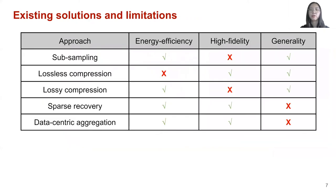There are several existing solutions trying to address this problem. However, all of these existing solutions have their own limitations. Subsampling could reduce energy consumption by transmitting a subset of the original data, but this approach leads to blind spots and causes lower fidelity. Lossless compression could guarantee accuracy and generality, but the compression ratio is typically low and it is hard to achieve a significantly longer battery life. Lossy compression can extend battery life, but there will be a large amount of information loss resulting in lower accuracy. Sparse recovery could guarantee energy efficiency and accuracy under certain circumstances, but it makes assumptions about the sparsity of the original data and thus loses generality. Data-centric aggregation also loses generality as it makes assumptions about the network topology and spatial correlation of the raw data.